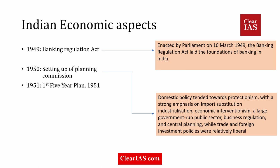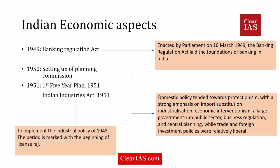In 1951, the Planning Commission came up with its First Five-Year Plan. Also in 1951, the Indian Industries Act was passed to implement the Industrial Policy Resolution of 1948. This period is also marked with the beginning of the 'License Raj' — the British Raj was over, but the License Raj had arrived. These developments trace the economic advancements from 1947 to 1951.